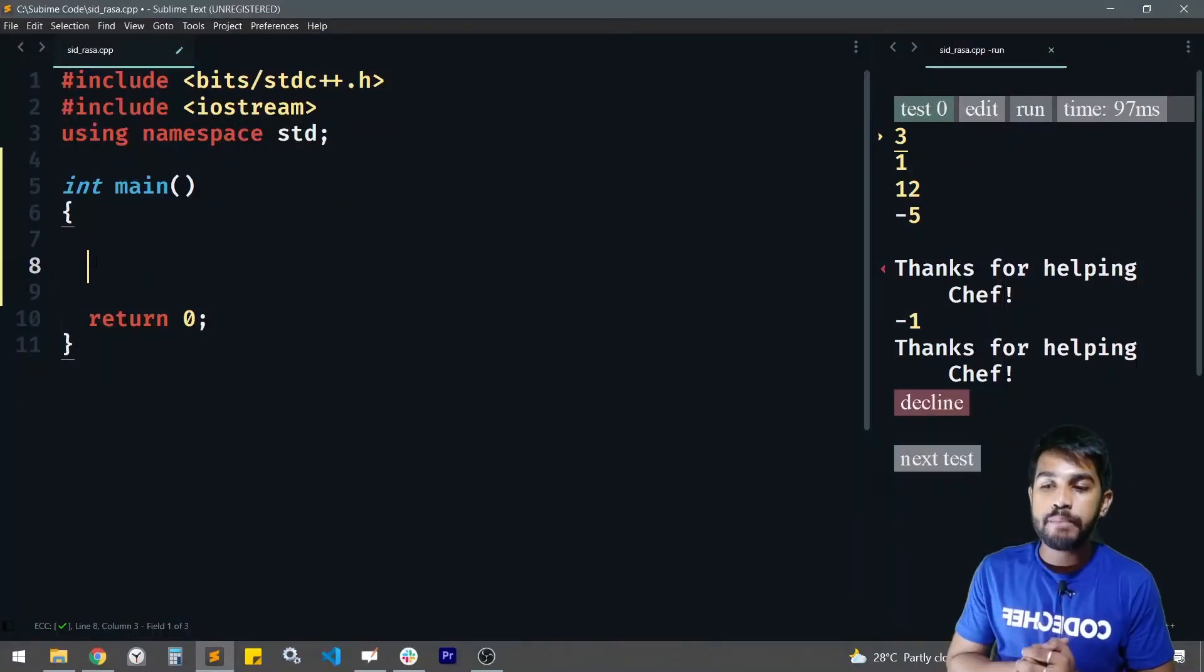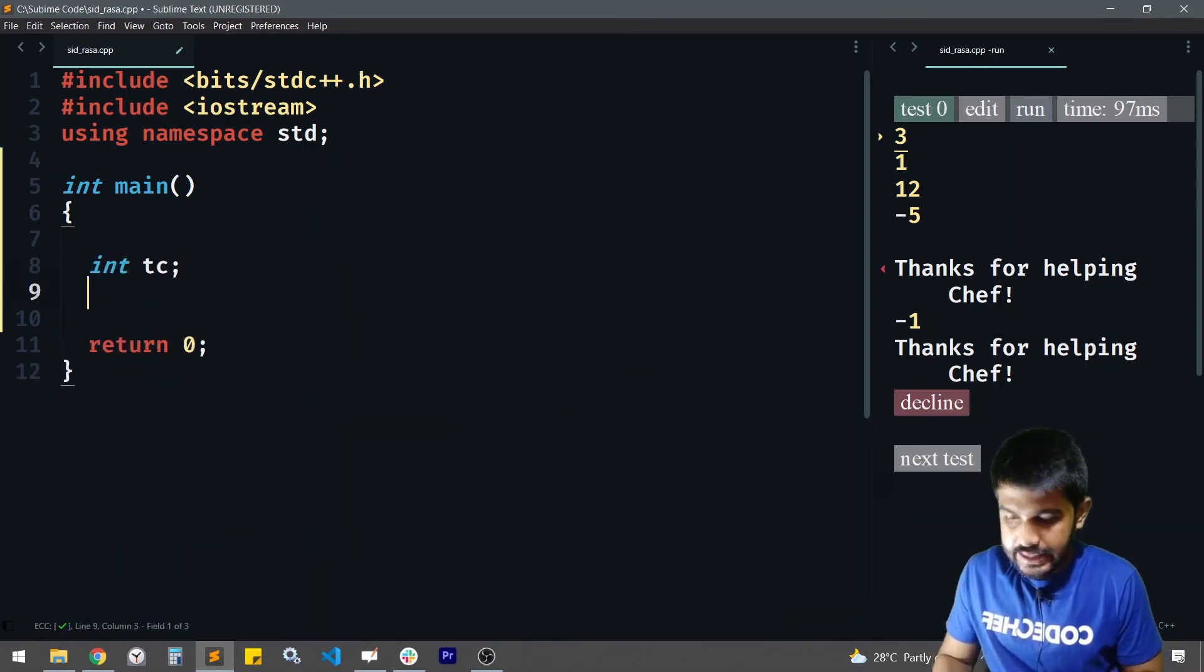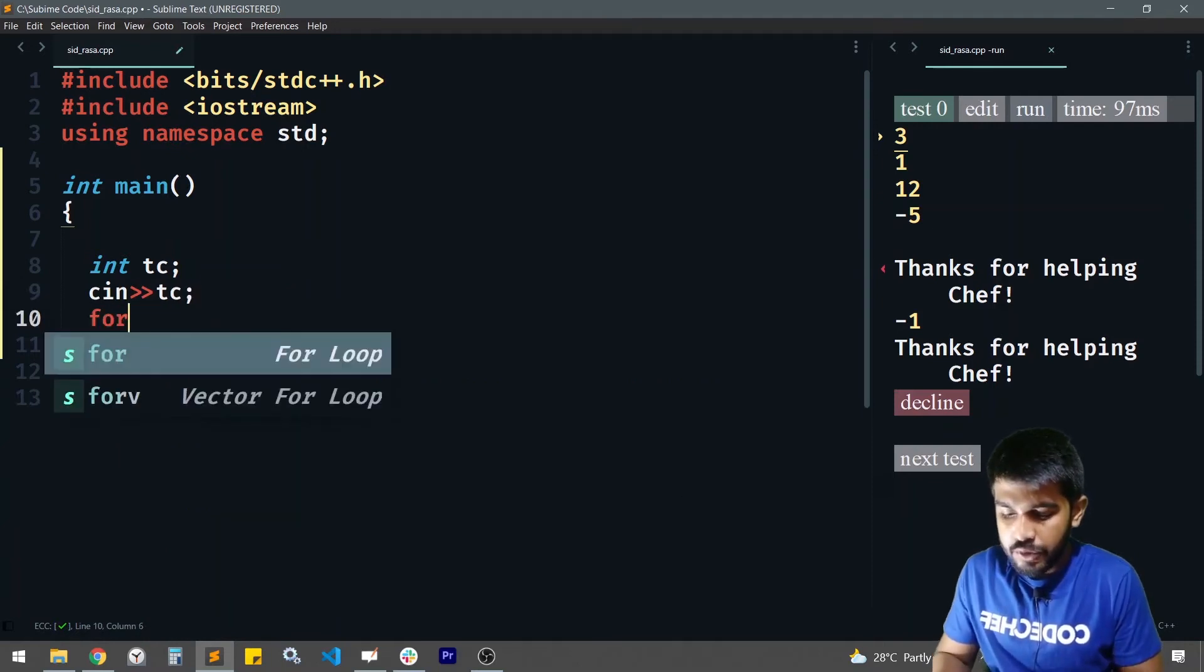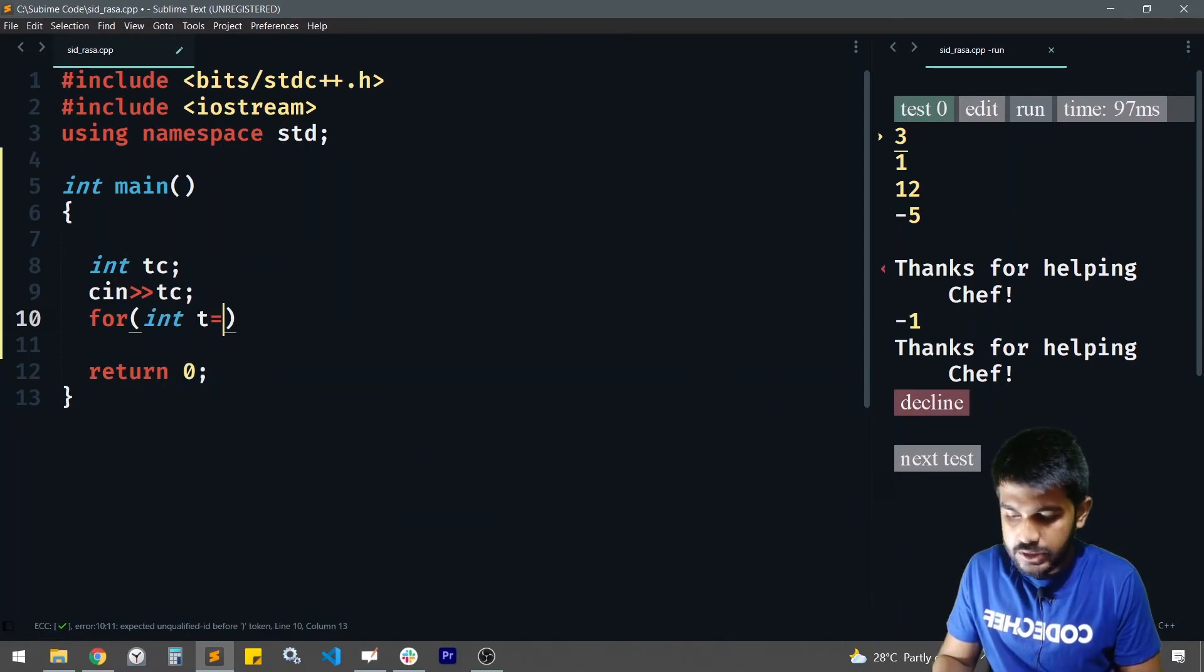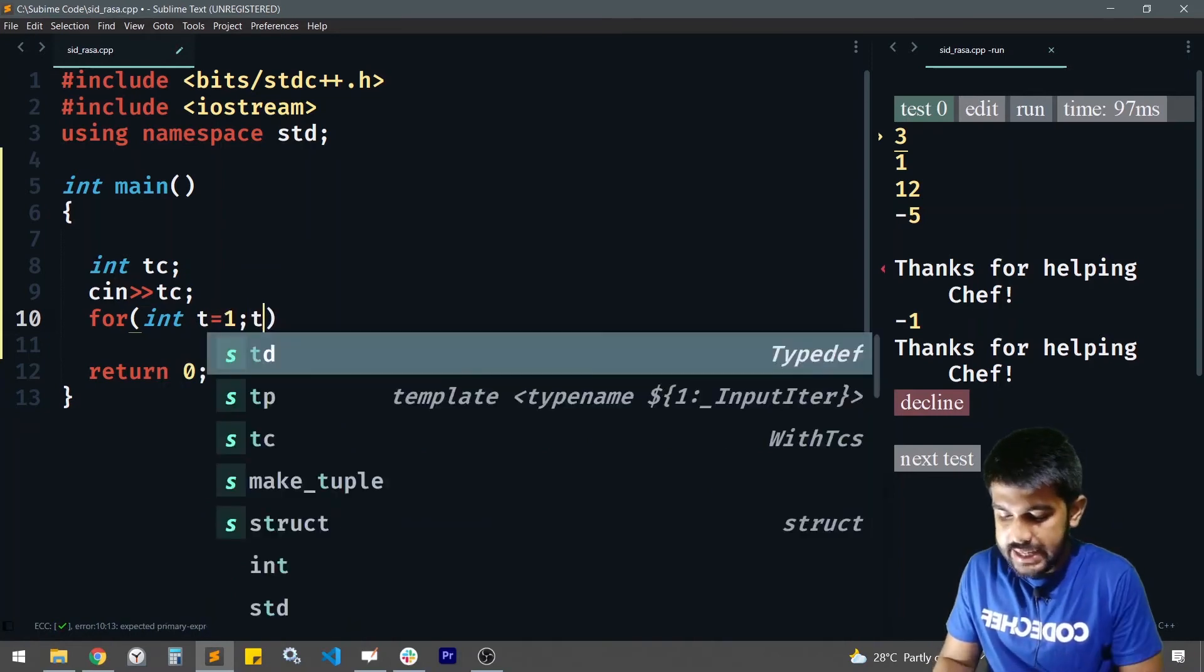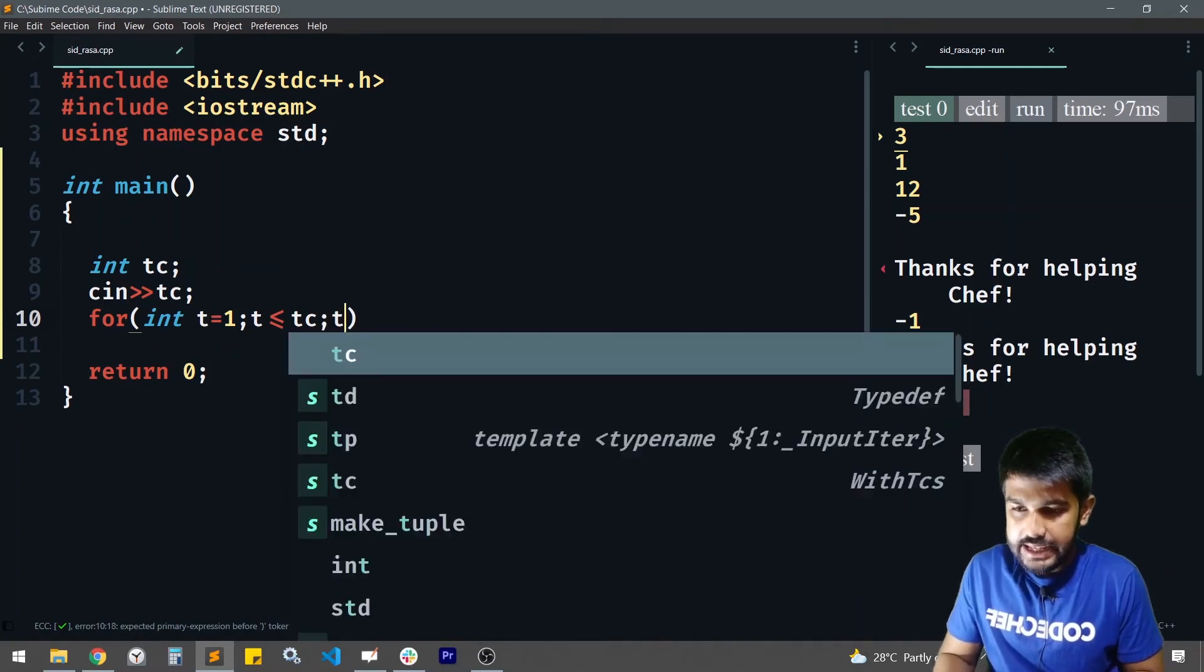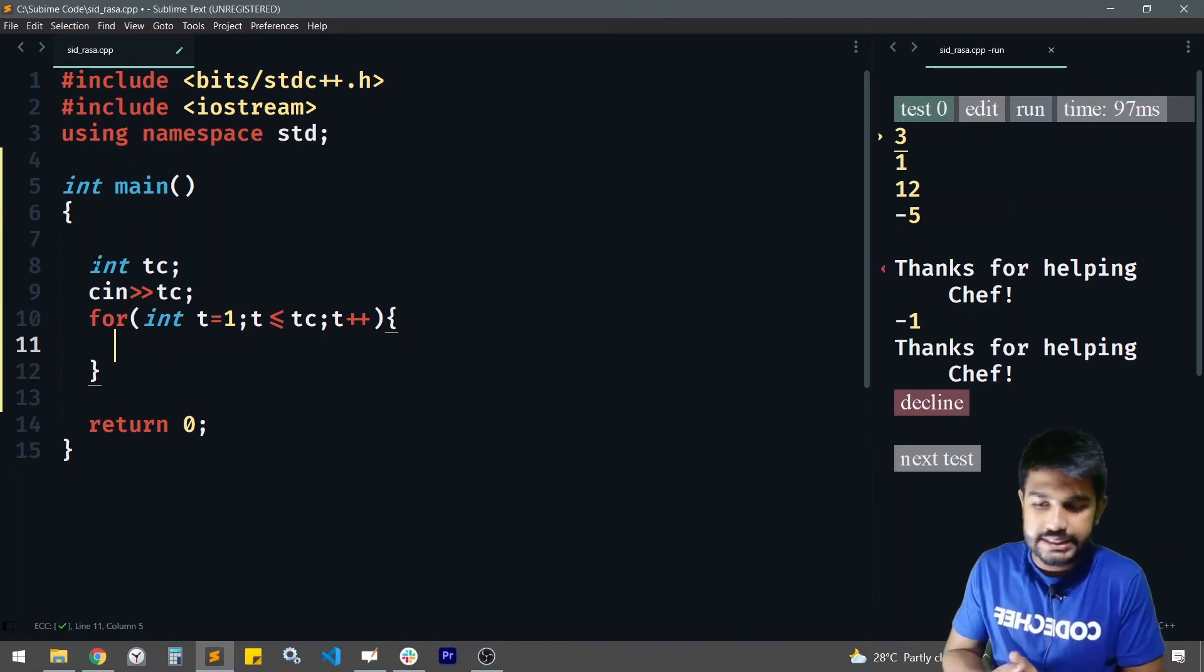Now we would be implementing this. Let's take the number of test cases, int tc, then we would be taking the input after the initialization, then we would be initializing a for loop, int t is equals to 1, and t is less than equals to tc, and t++.